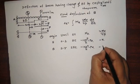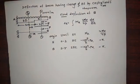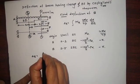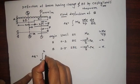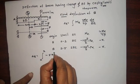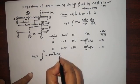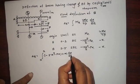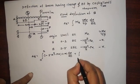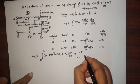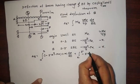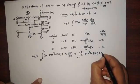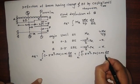So delta B equals the integration from 0 to 2 of (minus 5x² minus Px) times (minus x) dx divided by EI, plus the integration from 2 to 5 of (minus 5x² minus Px) times (minus x) dx divided by 2EI.